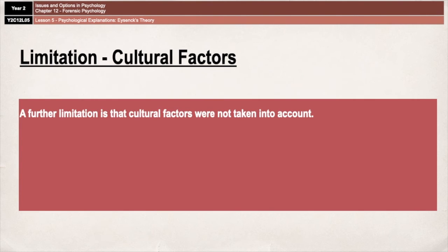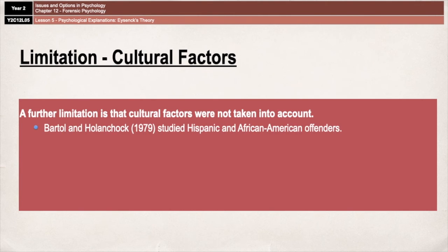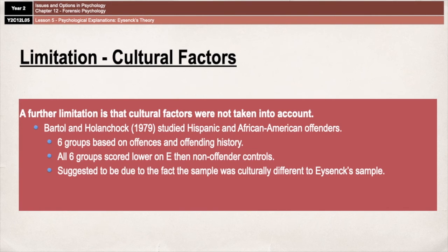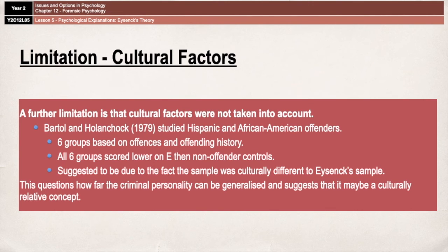As a final limitation, cultural factors were not taken into account in Eysenck's initial research. Bartol and Hollanchock in 1979 went into a maximum security prison in New York and studied Hispanic and African-American offenders. They created six groups based on offences and offending history, and found that all six groups scored lower on extroversion than the non-offender controls. This was suggested to be due to the culturally different sample, which questions how far the criminal personality can be generalised and suggests it may be a culturally relative concept.